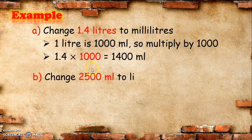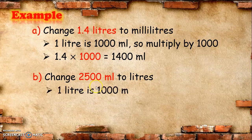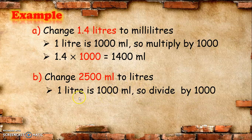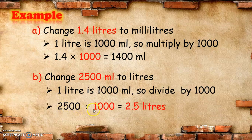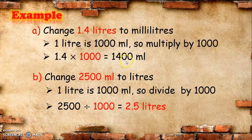Next, change 2,500 ml to liters. Since 1 liter is equal to 1,000 ml, to change from ml to liters we divide by 1,000. So, 2,500 divided by 1,000 is equal to 2.5 liters. In other words, 2,500 ml is equal to 2.5 liters. Similarly, 1.4 liters is equal to 1,400 ml.